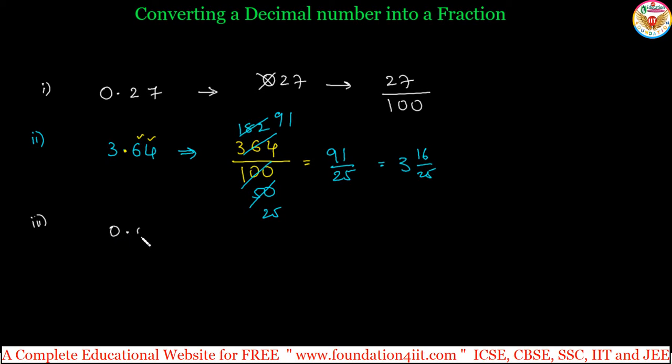Even if 0.0024 is there, just you will write 24 by... Do not take 0, 0, 0, 2, 4. 24 divided by - after the point, count the number of decimals. Even this should be counted. Total 4 decimal places after the point. So after 1, you write 4 zeros.